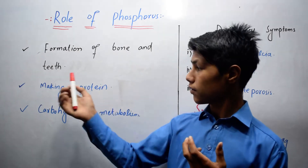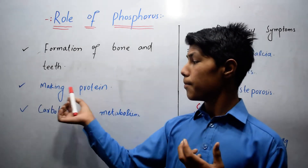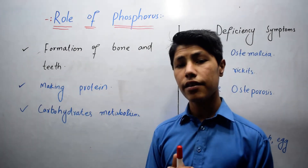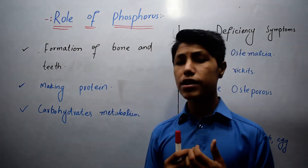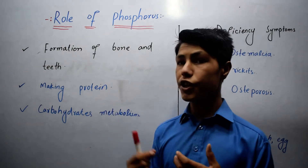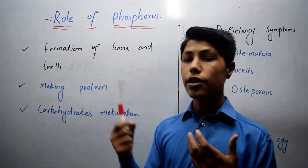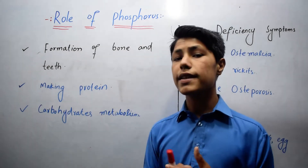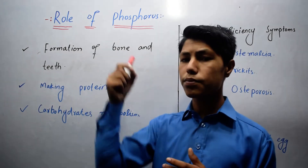The second function is making protein. Phosphorus helps to make protein inside the body. Protein synthesis can occur due to phosphorus.